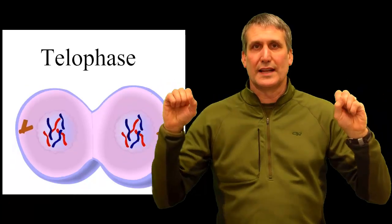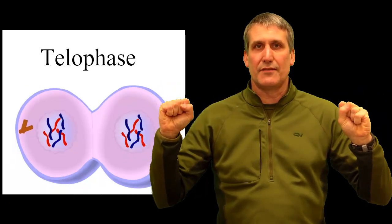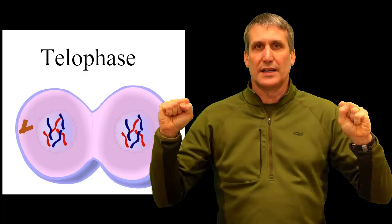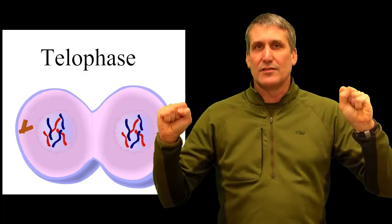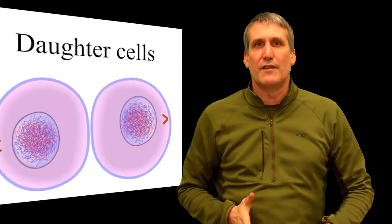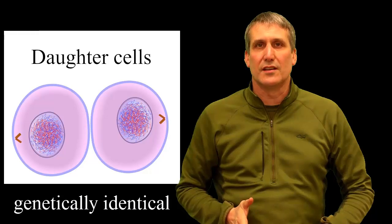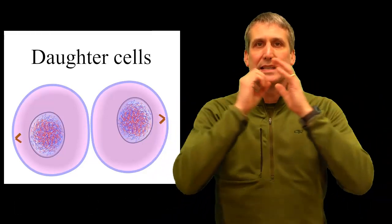Telophase is shown like this, because two new nuclei form and the chromosomes uncondense. That allows cytokinesis to occur, which divides the cell into two daughter cells, each one going back into interphase,